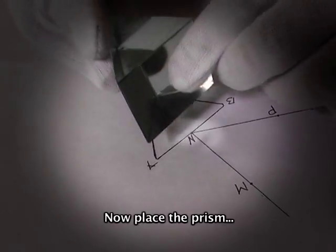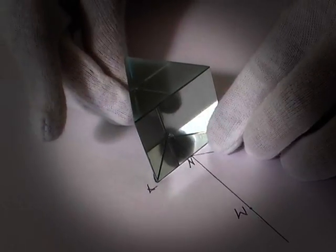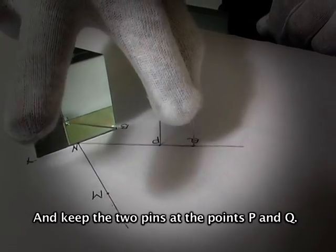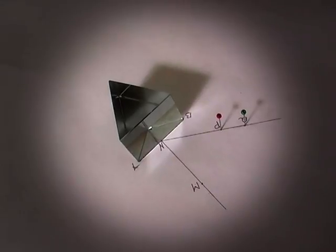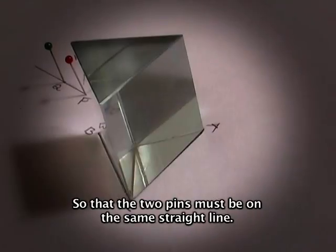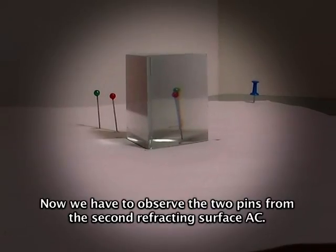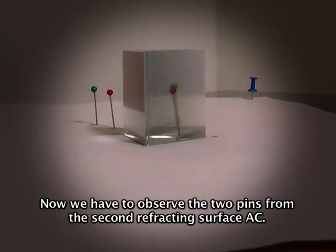Now place the prism and keep the two pins at the points P and Q, so that the two pins must be on the same straight line. Now we have to observe the two pins from the second refracting surface AC.